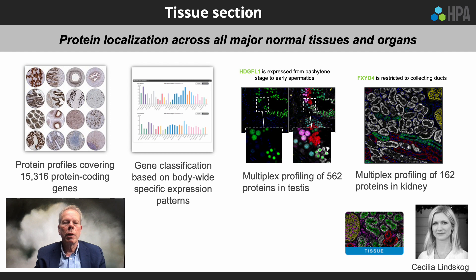The tissue section contains protein localizations across all major normal tissues and organs. The protein profiles cover about 15,000 protein-coded genes, and the classification is based on body-wide specific expression profiles. In version 22 we introduced multiplex profiling of proteins in testis, and we have now extended this to also include multiplex profiling of proteins in the kidney.